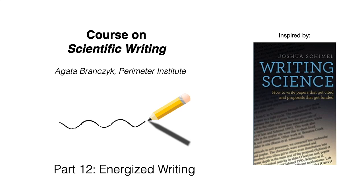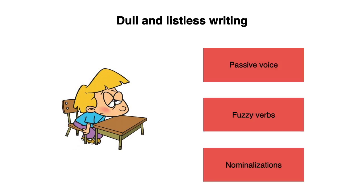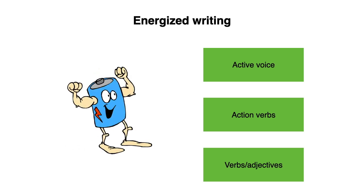Hello and welcome to part 12 of our course on scientific writing. In the previous video we discussed the power of words. In this video we will see how to give our writing more energy. There are several things that can make your writing dull and listless: using the passive voice, fuzzy verbs, and nominalizations. Replacing these will make your writing more energized, which will make it much more fun for the reader and much more likely that you will get your message across.